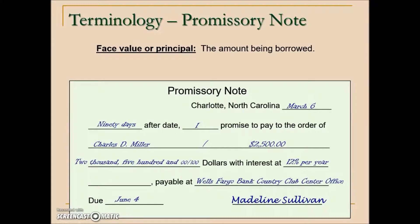Other pertinent information on a promissory note includes the principal, sometimes referred to as the face value. This is the amount borrowed, which is $2,500. To safeguard this, similar to what we do with checks, it's written not only in numerical form but also written out.